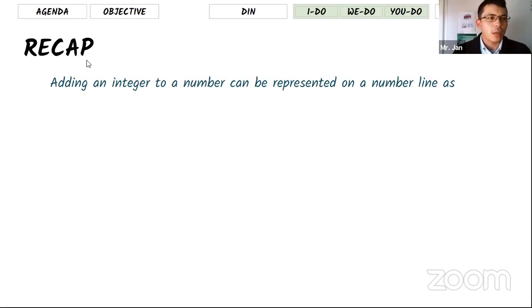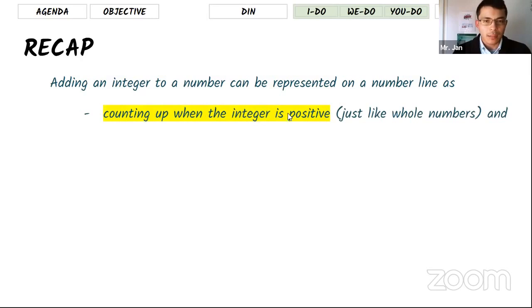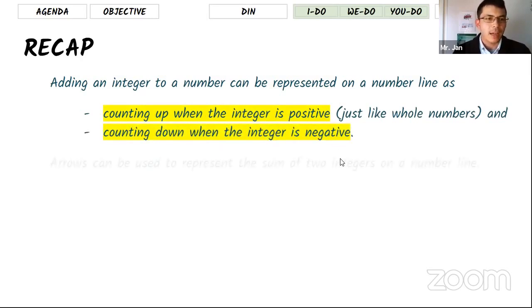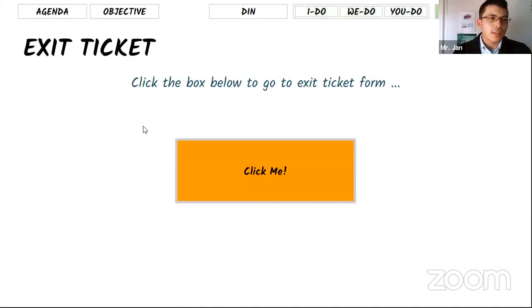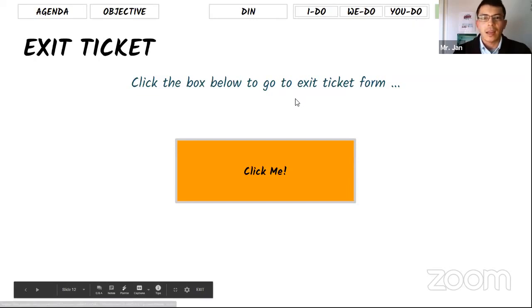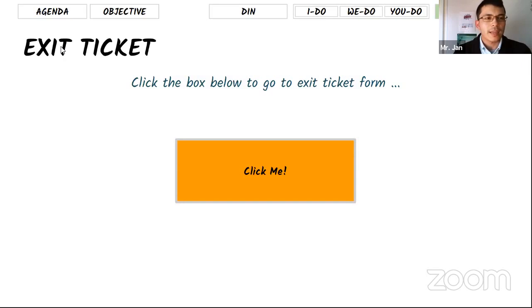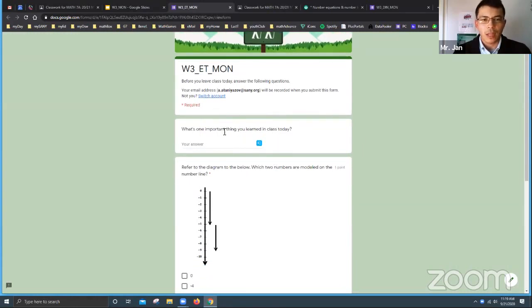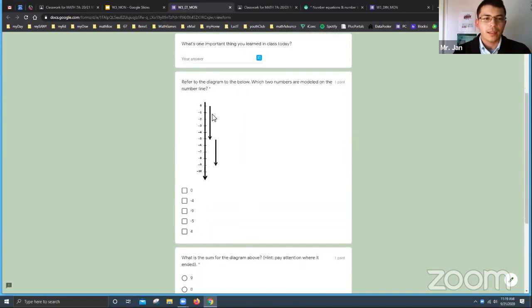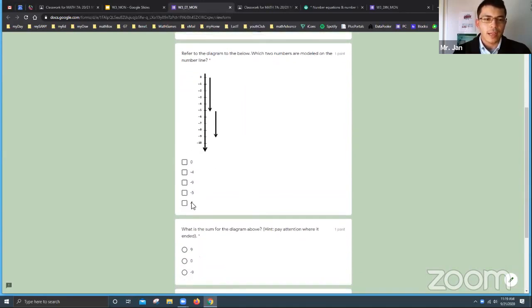Here's the recap and conclusion. Adding an integer to a number can be represented on the number line: counting up when the integer is positive, counting down when the integer is negative. Arrows can be used to represent the sum of two integers on the number line. Before you go, tell me the one important thing you learned in class today.